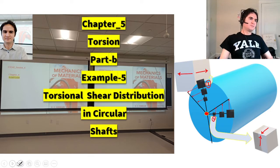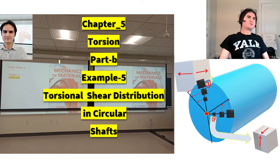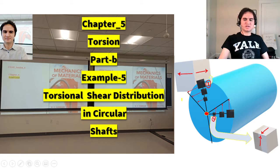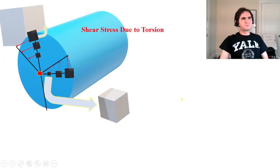Chapter 5, Torsion Part B, Example 5, Torsional Shear Distribution in a Circular Shaft. Shear Stress Due to Torsion.